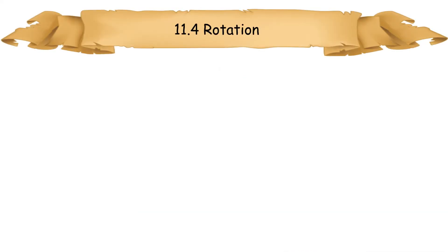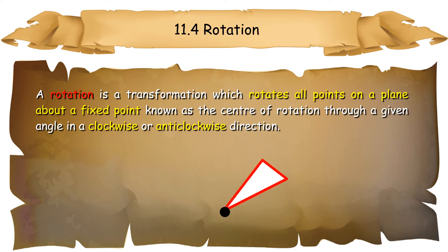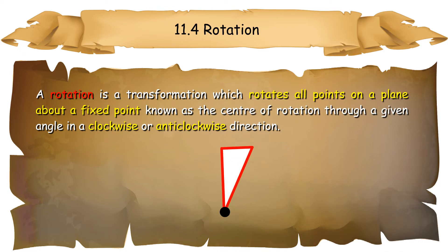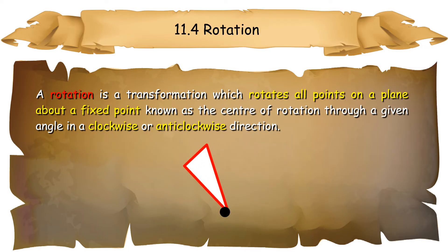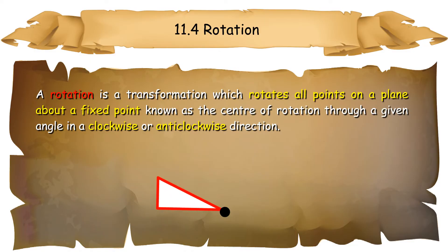11.4 Rotation. A rotation is a transformation which rotates all points on a plane about a fixed point, known as the center of rotation, through a given angle in a clockwise or anti-clockwise direction. In a rotation, the shape, size, and orientation of the image remain unchanged. The center of rotation is the only stationary point. The distance of all points of the image to the center of rotation is equal to the distance of the object to the center of rotation.